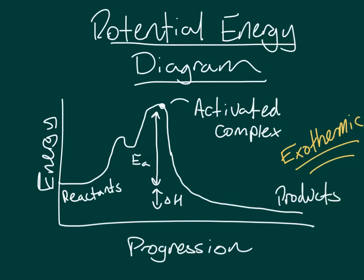A potential energy diagram shows the change in energy as a reaction progresses. You can see the energy of the reactants on the left side and the energy of the products on the right side. The activated complex is the point in the reaction where there is maximum potential energy. There are multiple activated complexes on this diagram because in a reaction mechanism there are multiple elementary reactions, each with its own activated complex. The activation energy is the amount of energy it takes to get the reactants to the activated complex. For this reaction, the reaction is exothermic because the change in energy is negative — there is a drop in energy. If the change in energy were positive, the reaction would be endothermic.